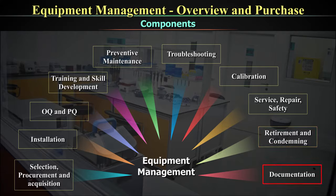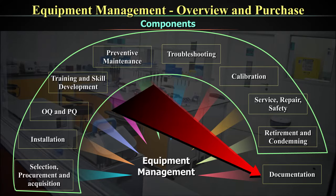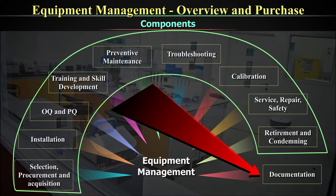Finally, documentation encompasses all the previous points — from selection, installation, performance qualification, operational qualification, preventive maintenance, troubleshooting, calibration, services and repair, through to retirement and condemnation. Everything should be documented, and these documents should tell the story of your equipment in your lab. This is a very comprehensive equipment management program discussed across multiple videos under the caption of equipment management.